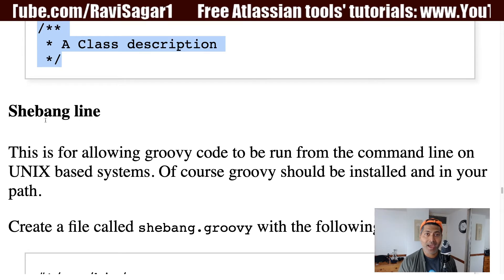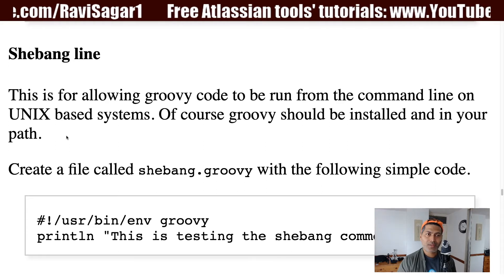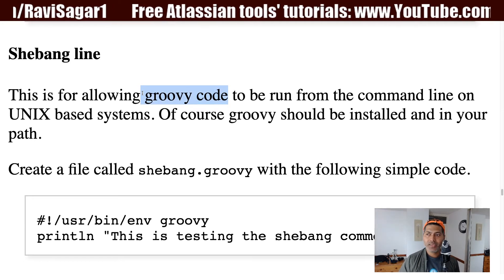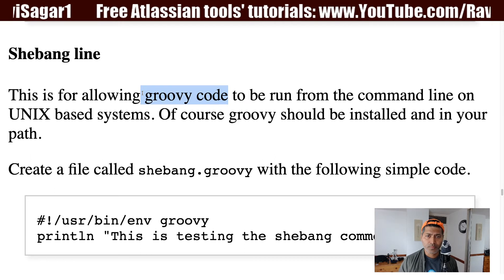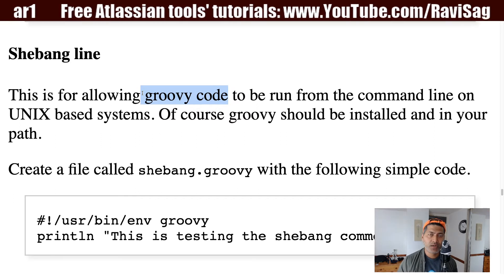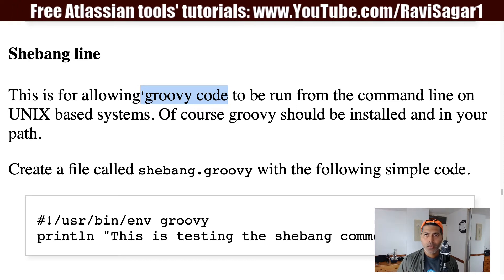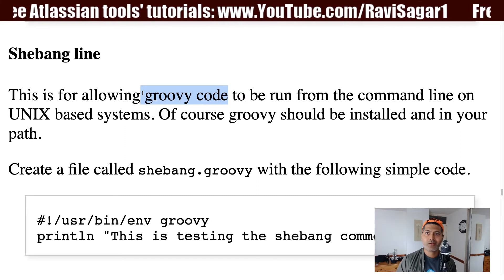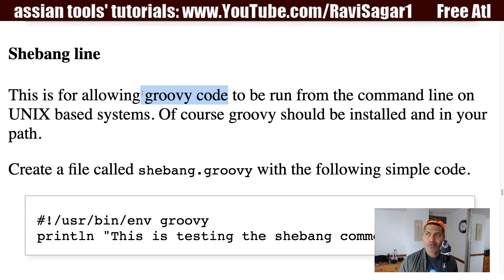The last type of comment I want to talk about is called the shebang line. It looks like a comment, but its purpose is to let you execute your Groovy code on a terminal — especially on Unix-based systems. This is useful if you are using Groovy for automation in Jira, Jenkins, or on a server on its own.